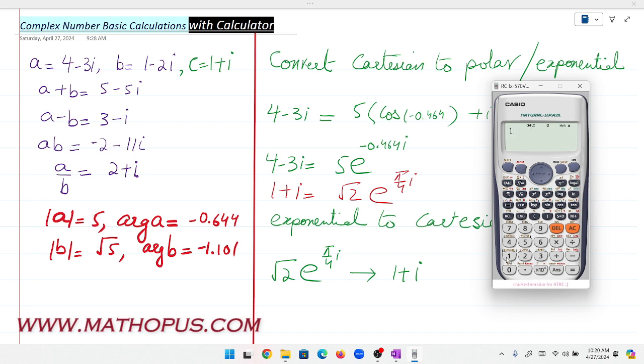Similarly, let's store the second number: 1-2i. Shift, RCL, then B. Now let's store one more: 1+i. Shift, RCL, then C. Now we have stored three complex numbers.